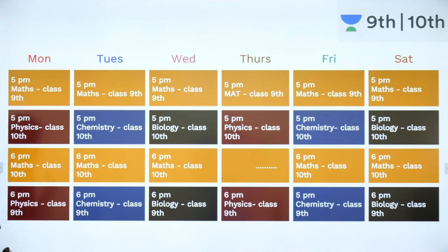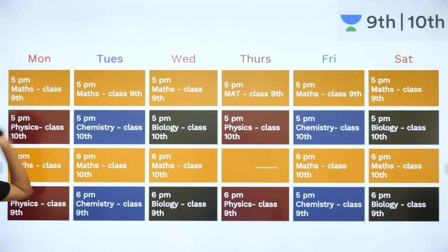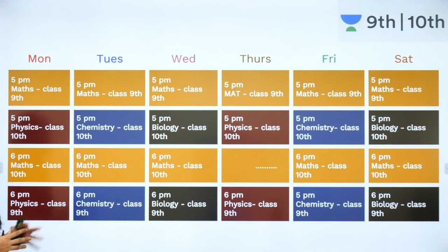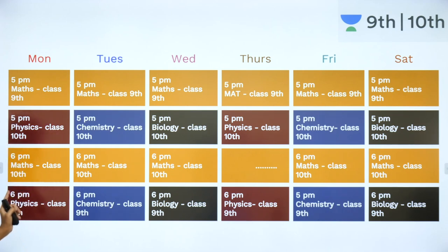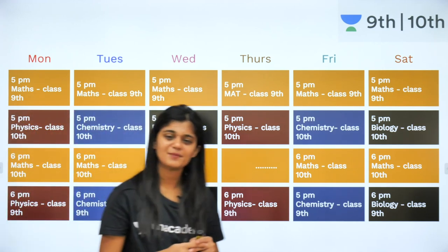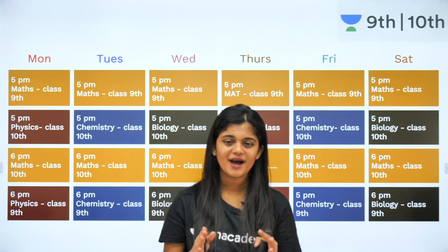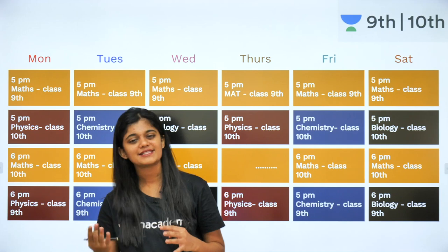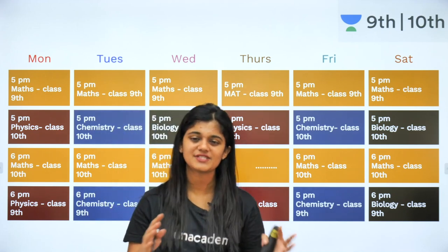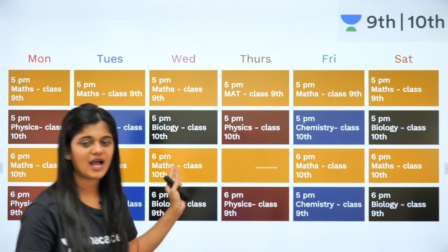Regarding timings: at 5 o'clock, if Maths is 9th class then Science is 10th class; at 6 o'clock, Maths is 10th standard and Science is 9th standard. This is our timetable — I hope it's not confusing. This is the Monday-to-Saturday timetable for Maths and Science.